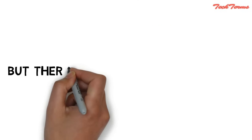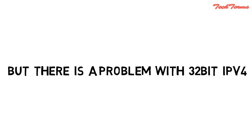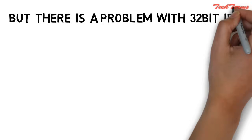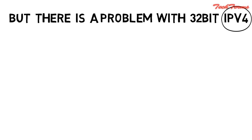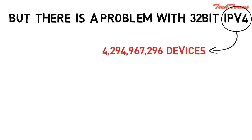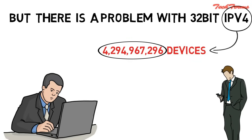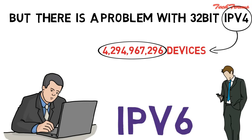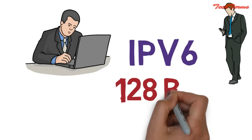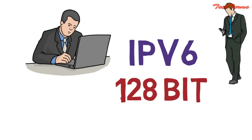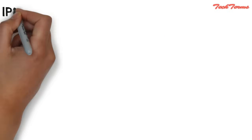But there is a problem with this 32-bit IPv4 address. With IPv4, we can connect only approximately 4 billion devices to the internet. But these days, we have devices like computers and smartphones far more than 4 billion. So slowly we are moving towards IPv6 address, which is a 128-bit IP address.